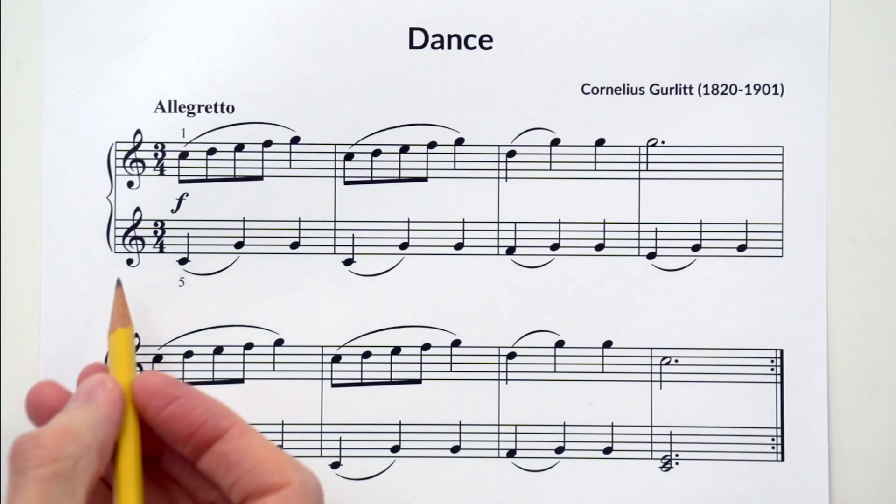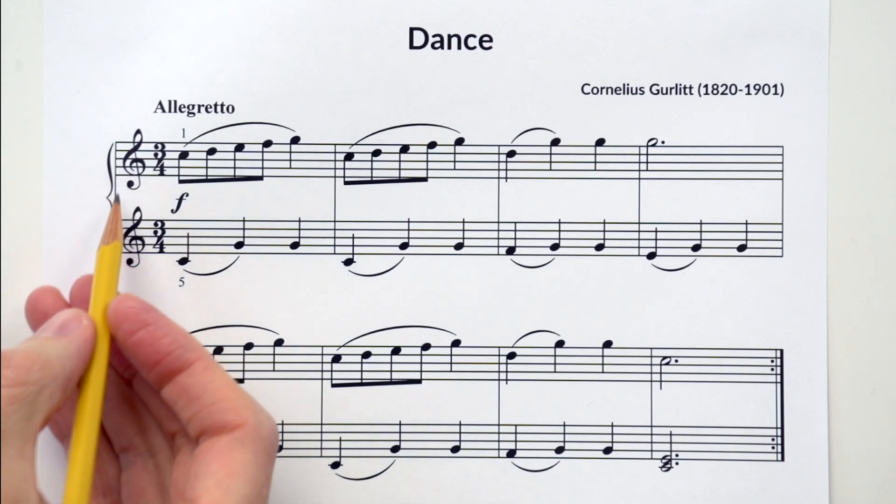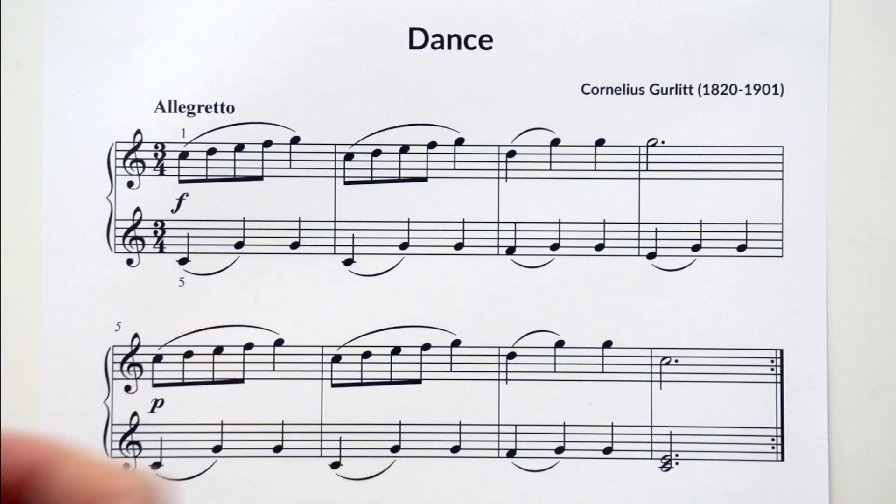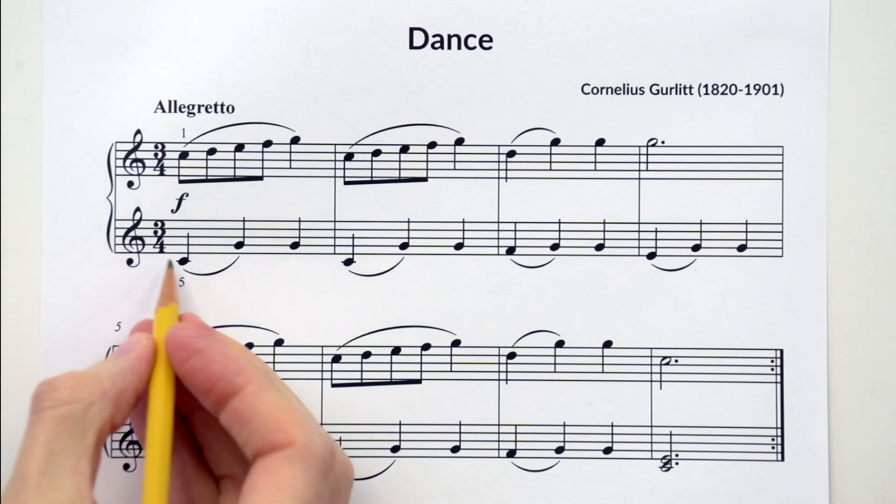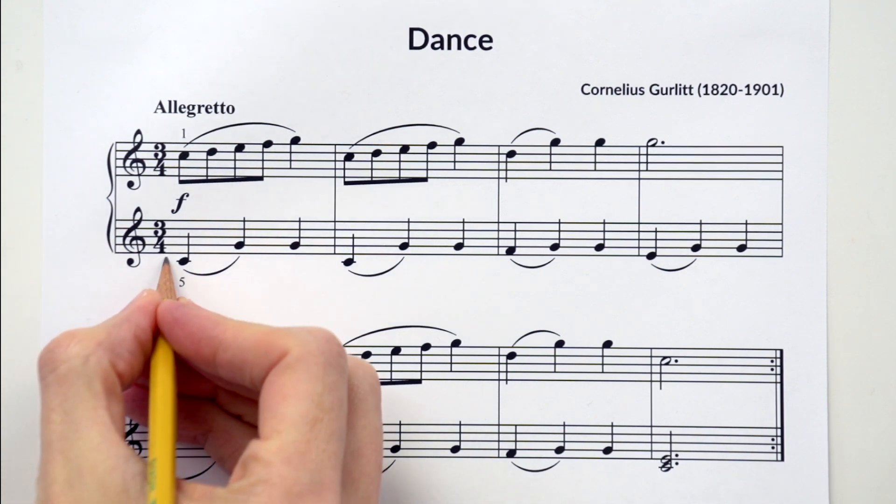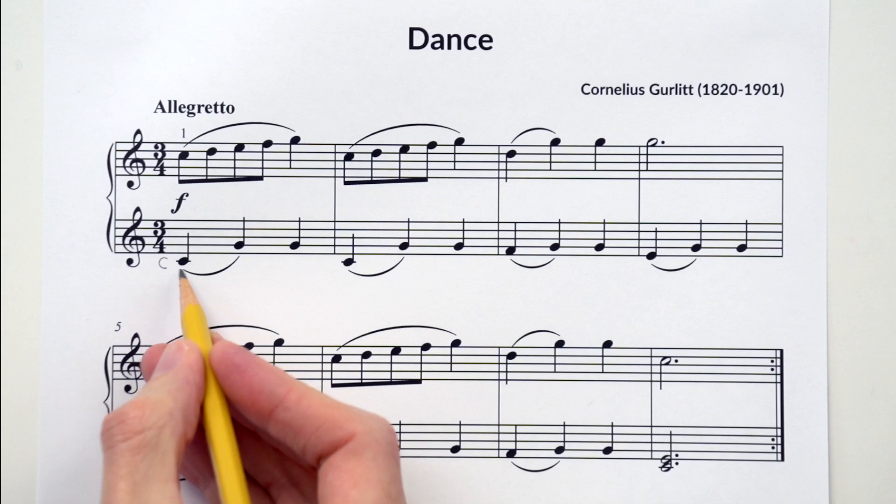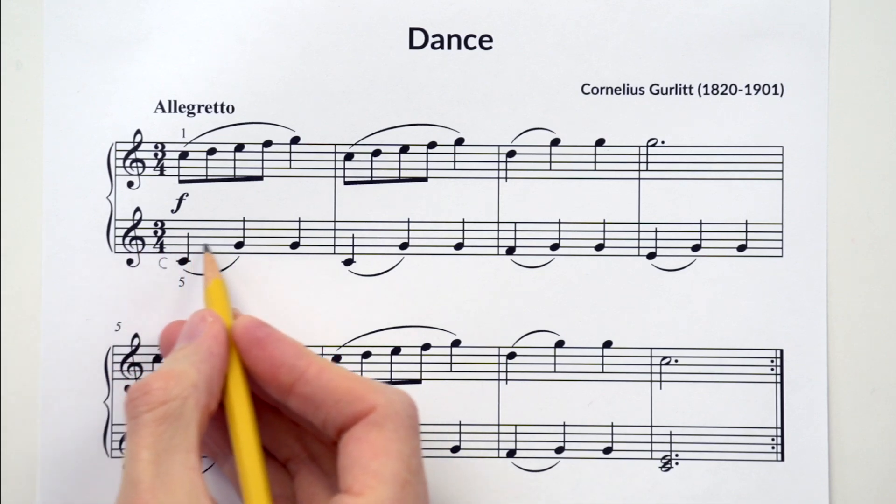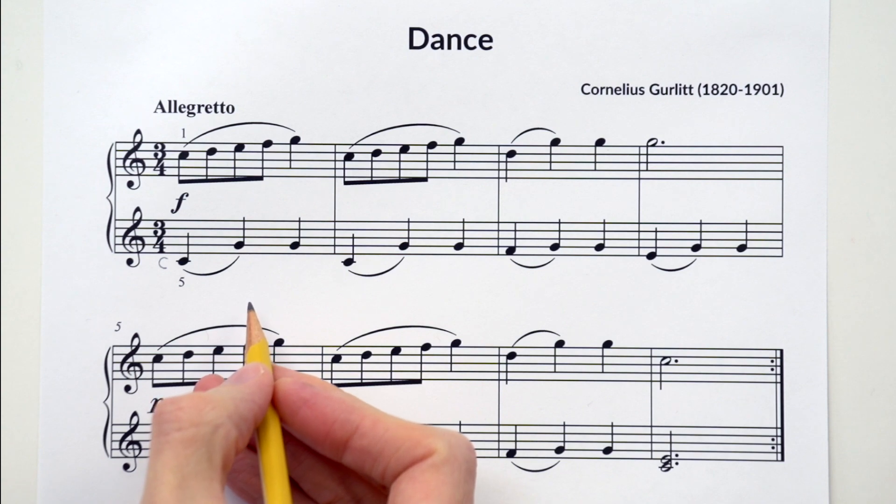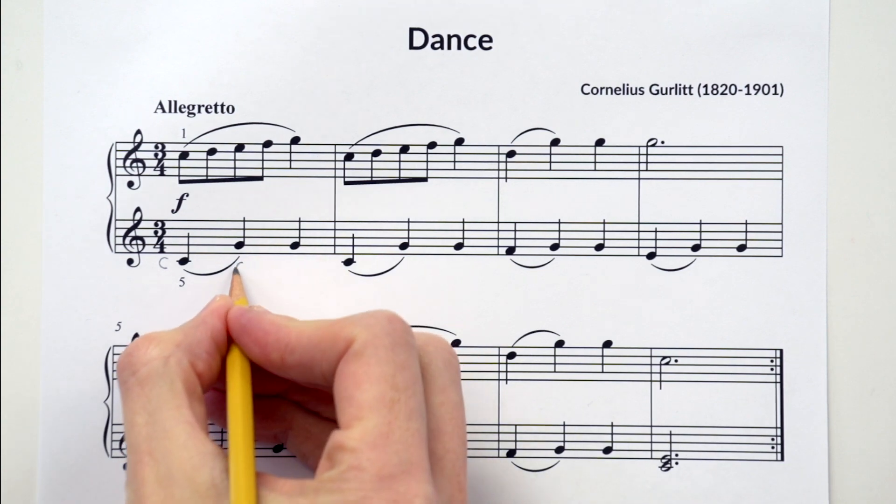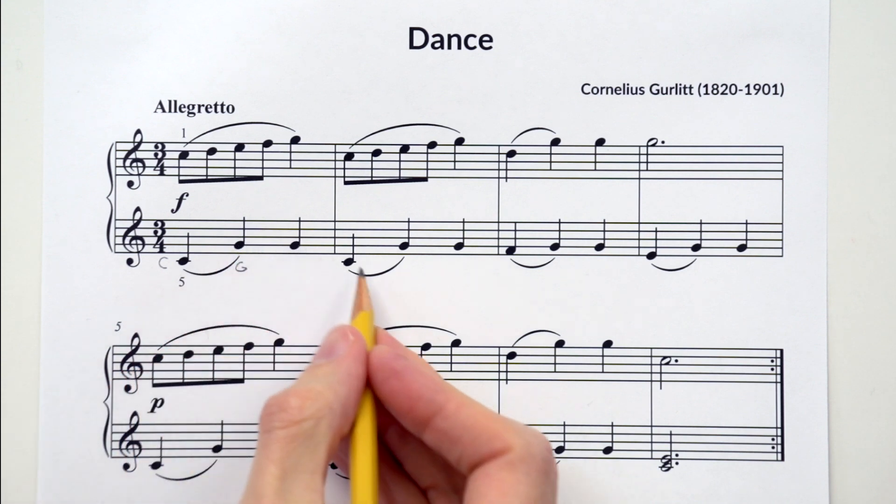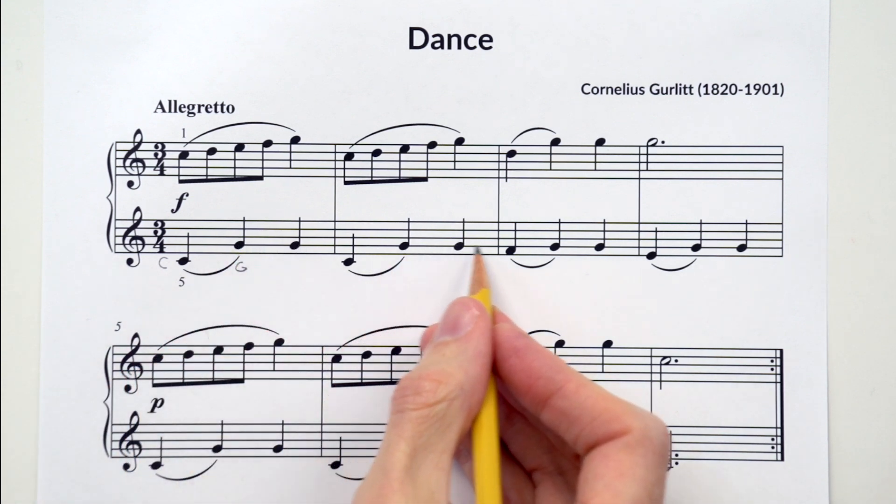Let's look at the left hand part for line one. Remember that in Dance both hands are playing treble clef. So if this is a treble clef, what note do you see here? That's right, this would be middle C. So we start on a C, and what note do you see next? Remember we're in treble clef. That's right, it's treble G. So we have C G G, C G G.